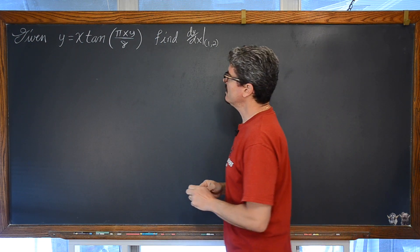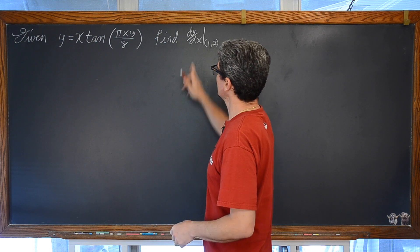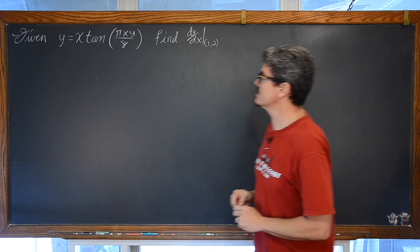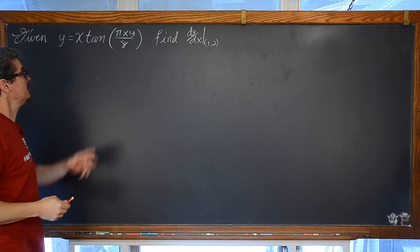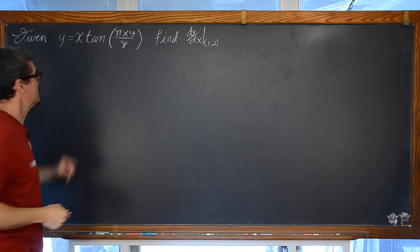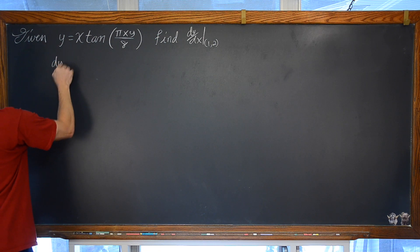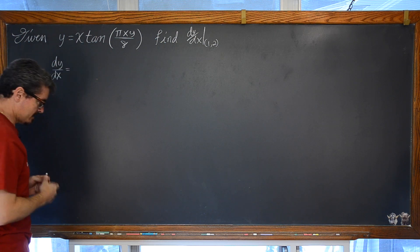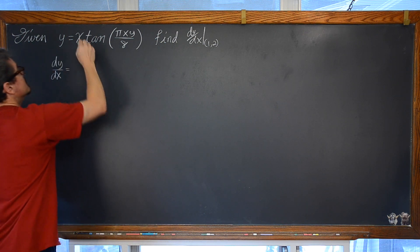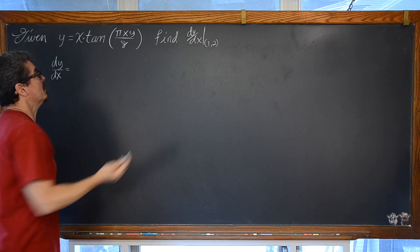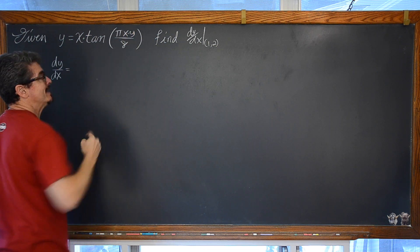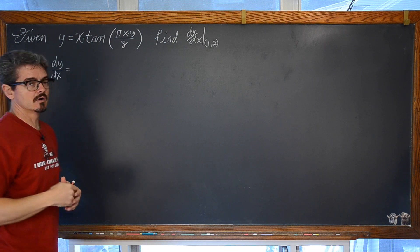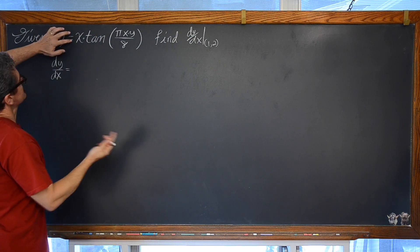Ok, so we are going to be taking a derivative as indicated by this notation with respect to x. So we are going to take the derivative of the left and right hand side implicitly, because we have all these x's and y's mixed up. And we have dy/dx is equal to — now we have the product of two functions here, and we have the product of two functions that are inside the tangent function. So a little bit of nice practice for our process of taking a derivative.